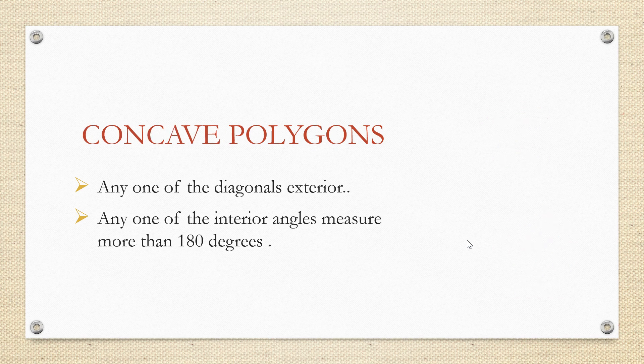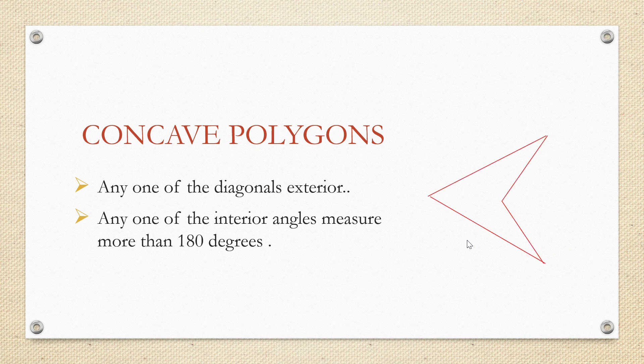Concave polygon. If any of the diagonals is exterior to it and if we have any angle which measures more than 180 degrees, then it is called a concave polygon. Consider this figure with vertices mentioned here. At C, we can see the angle is greater than 180 degrees. So, this is a concave polygon.